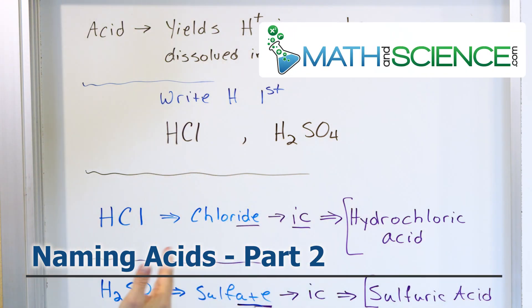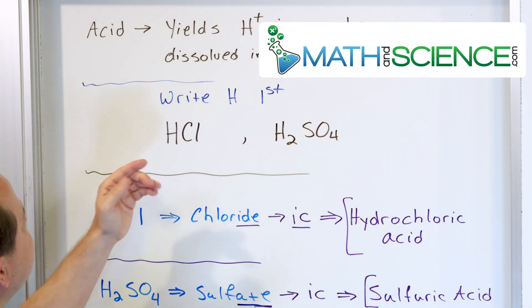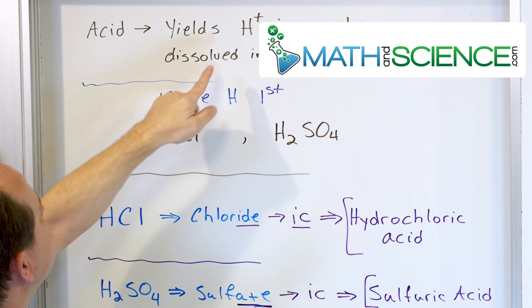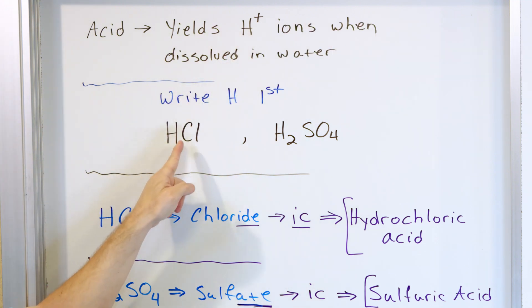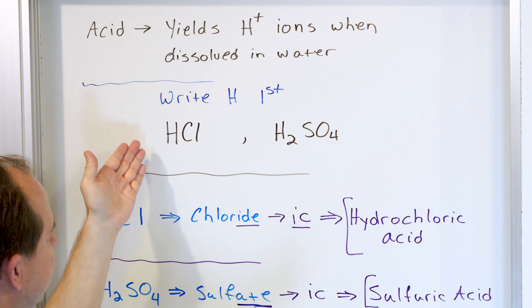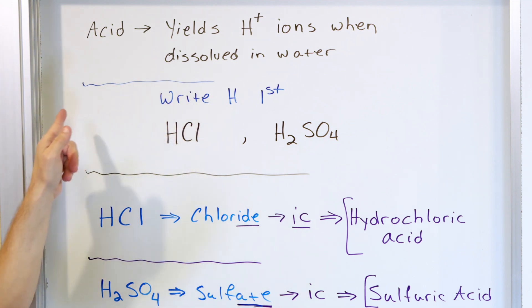Basically when we name acids, what is an acid? It's a substance that when we dissolve it in water, it yields hydrogen ions. So it takes the place of, if you want to think of sodium and sodium chloride, the hydrogen comes off as an ion H+, which is just a proton basically, a hydrogen nucleus or hydrogen atom which lost its electron. And that's what an acid is.